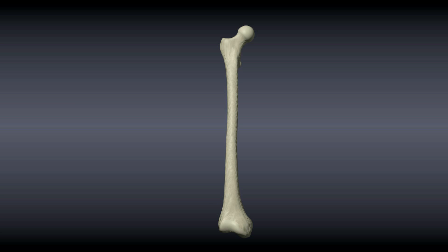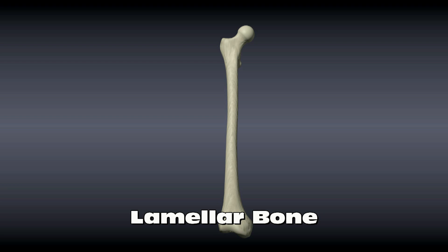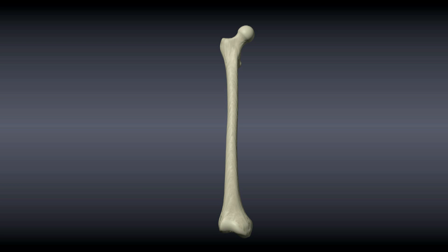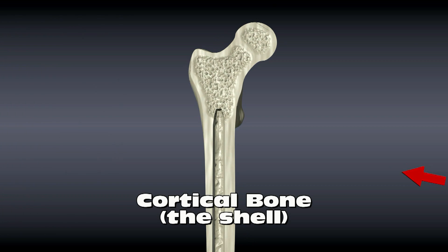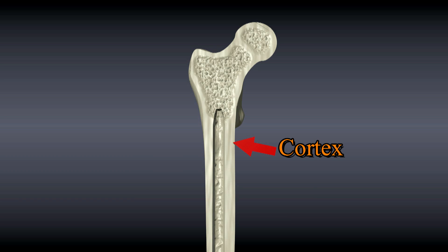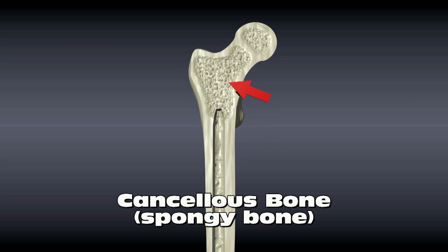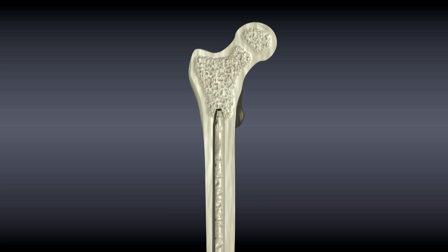Mature healthy bone is known as lamellar bone. It is strong and rigid, making it suitable for providing structure for our bodies. There are two types of lamellar bone — let's open up this femur to see the difference. Cortical bone is the dense, stiff, strong bone that forms a shell around the rest of the bone — cortex can mean shell or husk — and is the superficial outermost layer. Cancellous bone is the spongy bone inside; it is softer and more elastic than cortical bone and appears more porous.